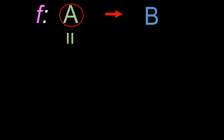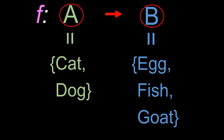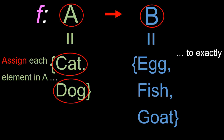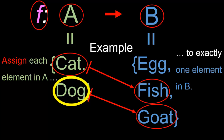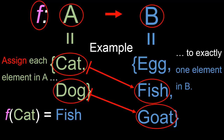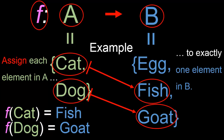Let's consider an example. Suppose the set A consists of cat and dog, while the set B consists of egg, fish, and goat. Then what a function f would do is assign each element in A to exactly one element in B. So for example, the function f might assign cat to fish and dog to goat. Here's how we can express this function f in writing: we write that f(cat) is fish and f(dog) is goat.